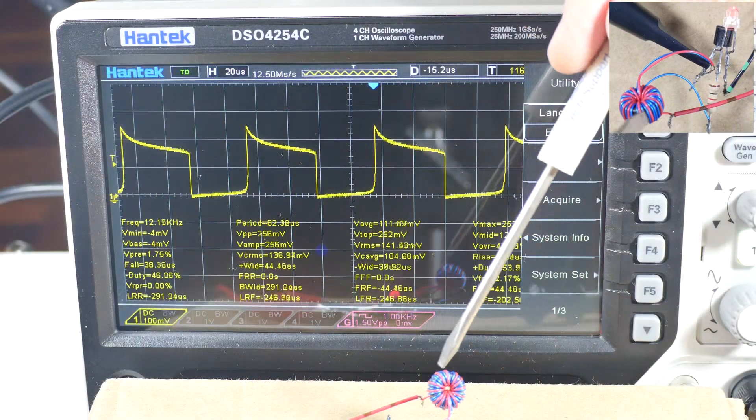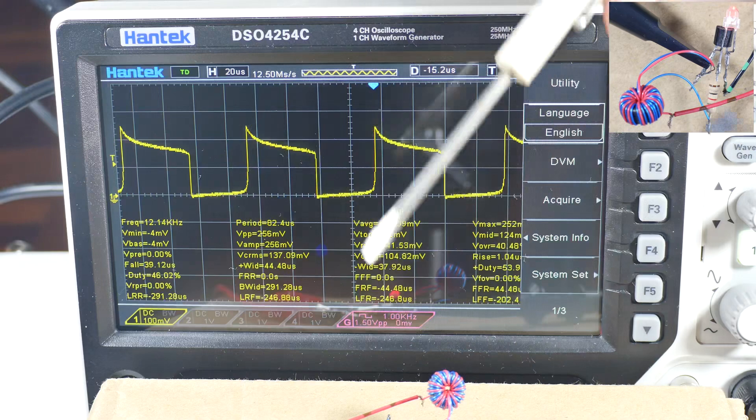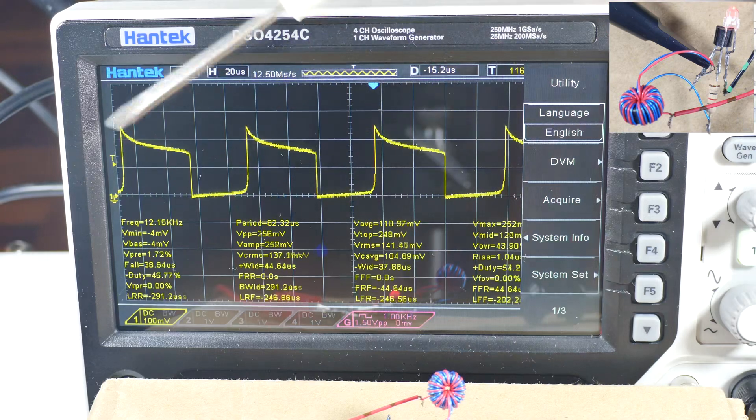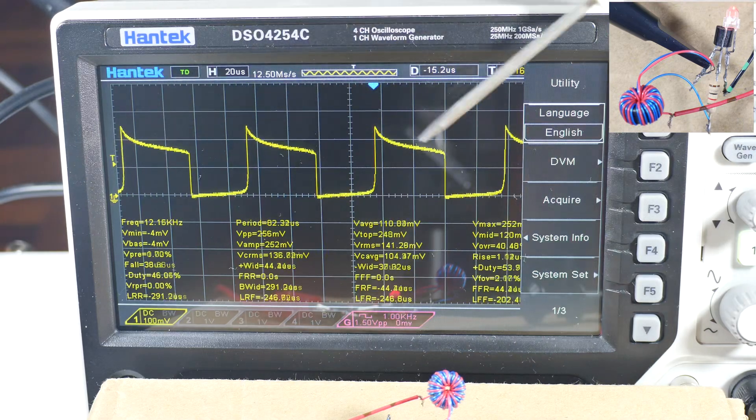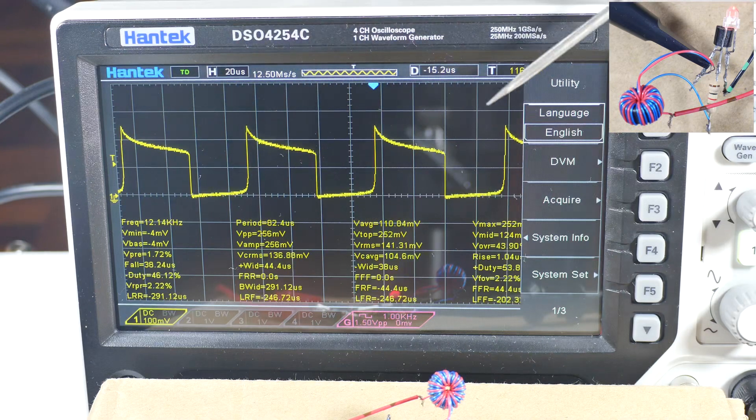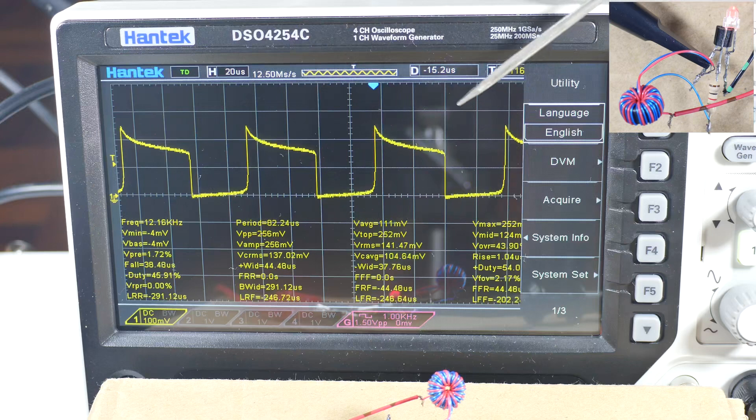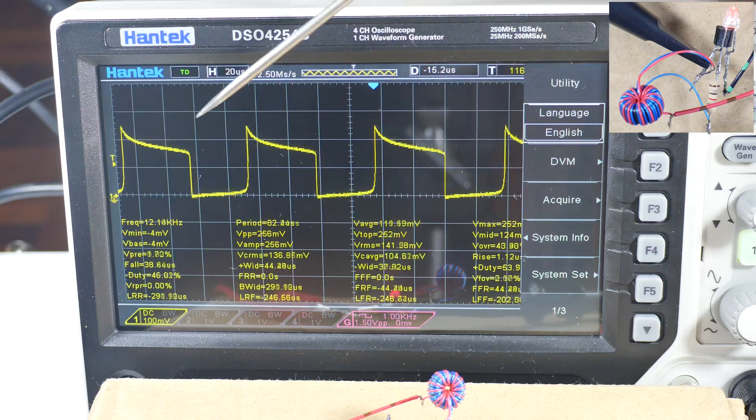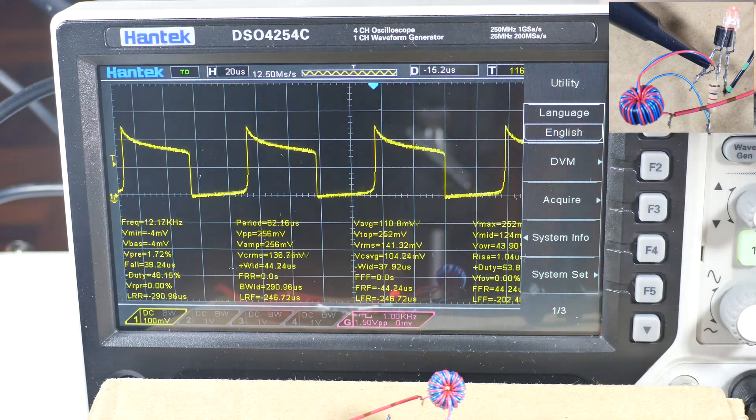This is the blue Joule Thief and I have it running right now on one volt. You can see the wave that it's producing and this is kind of interesting. It's not a sine wave as I had originally anticipated. It is a square wave.